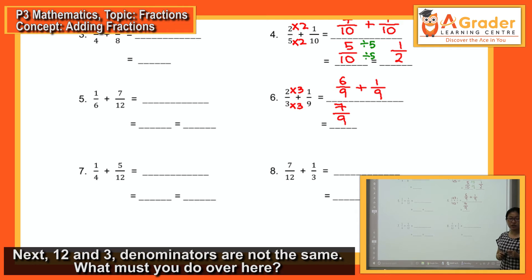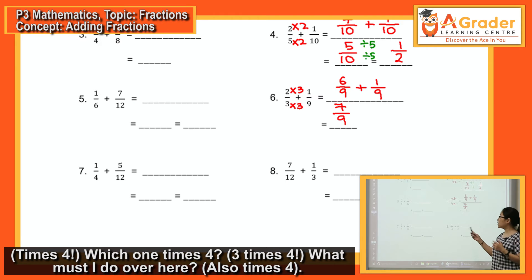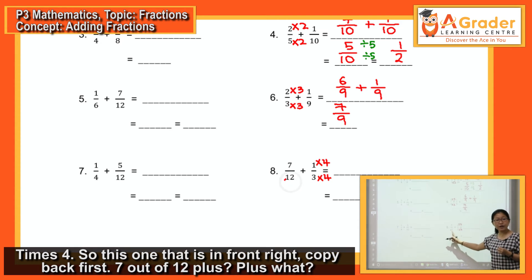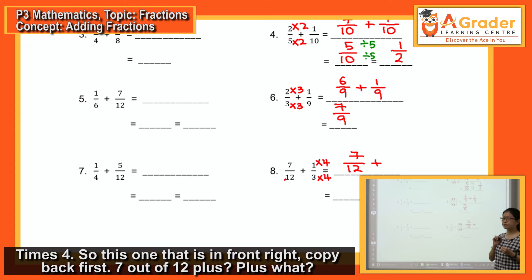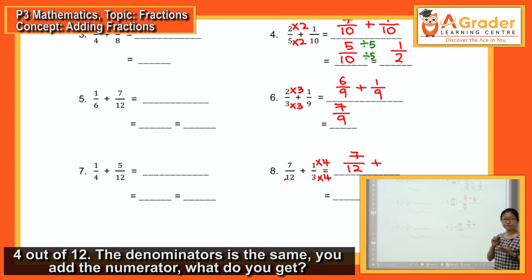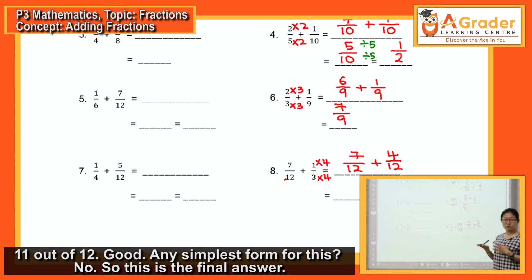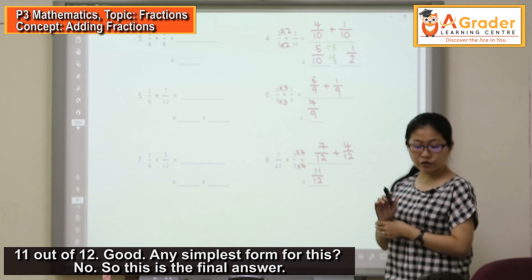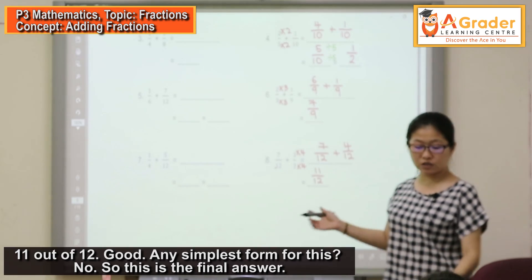Next: denominators 12 and 3 — they are not the same. You need to times 3 by 4 to get 12. So 3 times 4, and also 1 times 4 gives 4. Copy back: 7 out of 12 plus 4 out of 12. The denominator is now the same, so you add the numerators: 7 plus 4 gives 11. The answer is 11 out of 12. Any simplest form for this? No — so 11 out of 12 is the final answer.